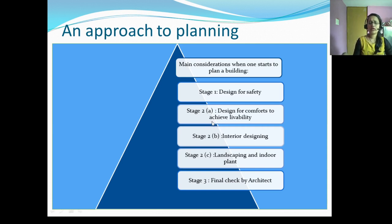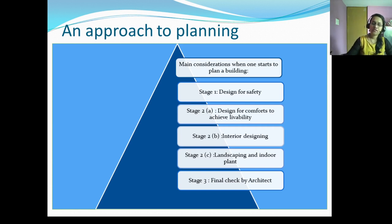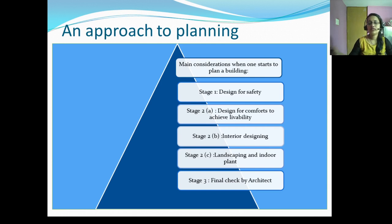Livability is finally achieved through interior design, which decides the color, texture, and pattern for flooring, ceiling, wall surfaces, and all visible objects such as electrical fans and fittings. Stage 2C is landscaping and indoor plants for achieving utility and aesthetic pleasure, carried out by a landscape architect. After this, the architect performs a final check of the drawings before execution for construction.